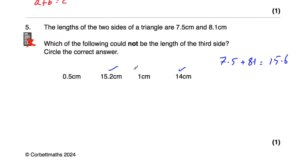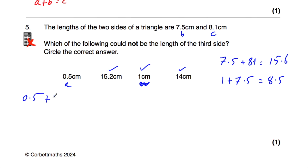Now let's look at 1cm and 0.5cm. For 1cm: A plus B would be 1 plus 7.5, which is 8.5 — bigger than the third side of 8.1, so that could exist. For 0.5cm: A plus B would be 0.5 plus 7.5, which equals 8. But the longer side is 8.1, and 8 is less than 8.1, so those sides wouldn't reach each other. The answer is 0.5cm — that could not be the length of the third side.